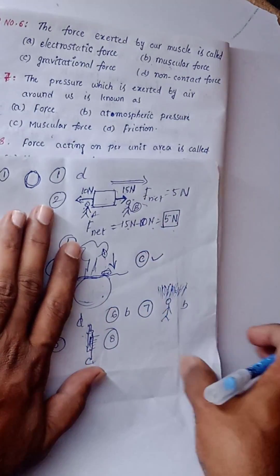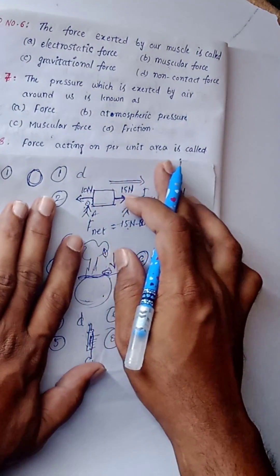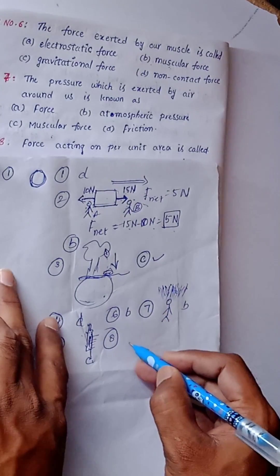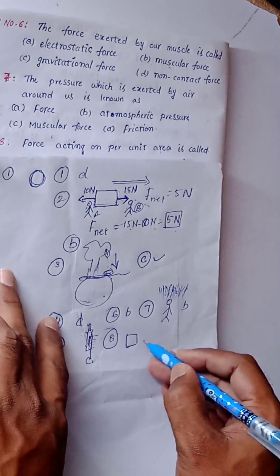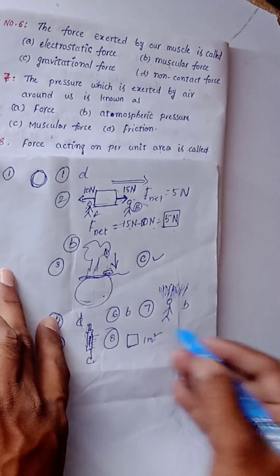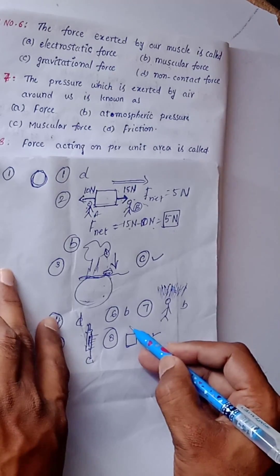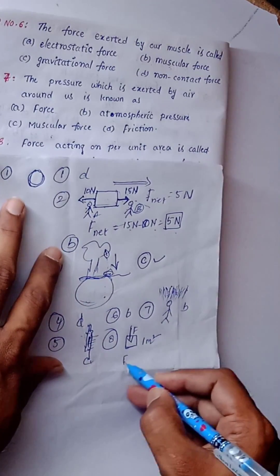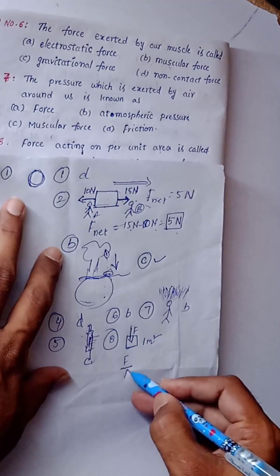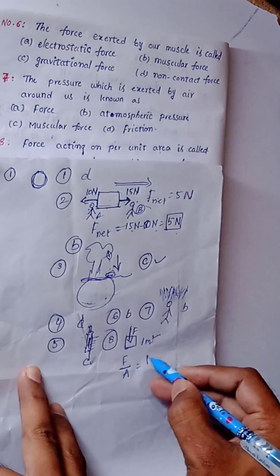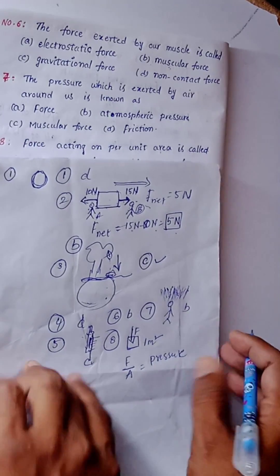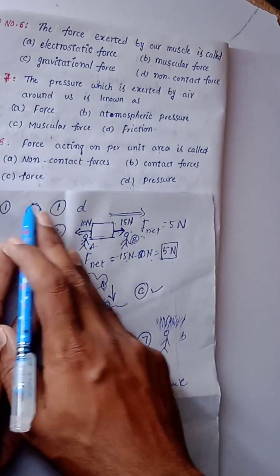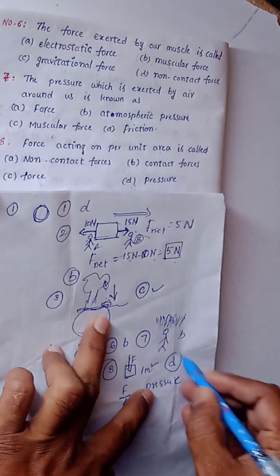Question number 8: Force acting on per unit area is called — force divided by area is called pressure. So option D is the right answer.